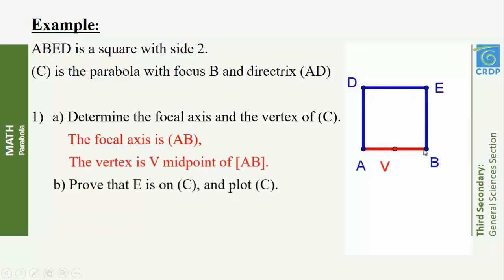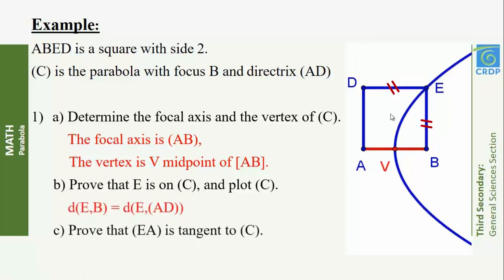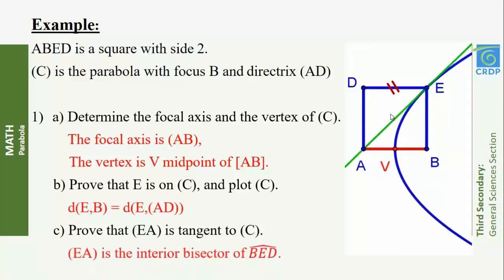Prove that E is on C and plot C. Since the distance from E to focus B equals ED, the distance from E to directrix AD, then E is on C. Prove that EA is tangent to C. EA is the anterior bisector of angle BED; therefore the line EA is tangent to C at E.